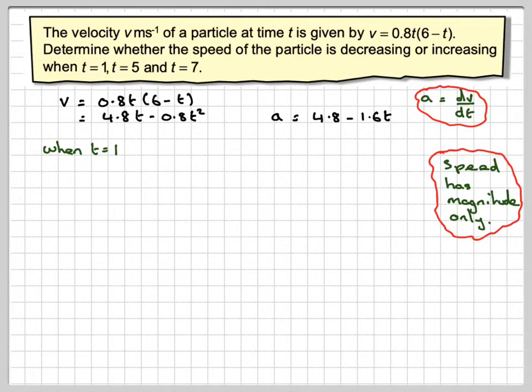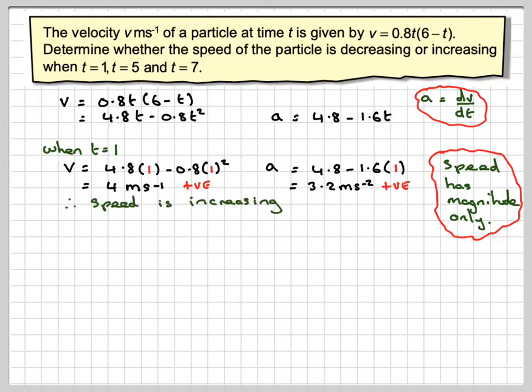So when t equals 1, v will be equal to 4.8 times 1 minus 0.8 times 1 squared, which will give 4 meters per second, which tells me it's positive, the velocity. And therefore, a is 4.8 minus 1.6 times 1, which means we're going to get 3.2 meters per second squared. And that's also positive. So we've got velocity positive, acceleration positive, that will mean that the speed is increasing.